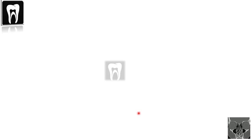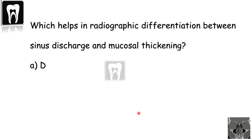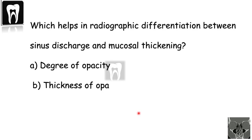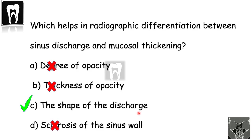So let's answer the question — differentiation between sinus discharge and mucosal thickening. A is incorrect because the degree of opacity is similar for both — they are already opaque. B is incorrect because the thickness of the opacity is not a useful differentiator. C is correct because the shape of the discharge and the mucosal thickening are different — the mucosal thickening has a ribbon-like appearance. D is incorrect because sclerosis happens in the sinus walls and is distinct from both discharge and mucosal thickening.